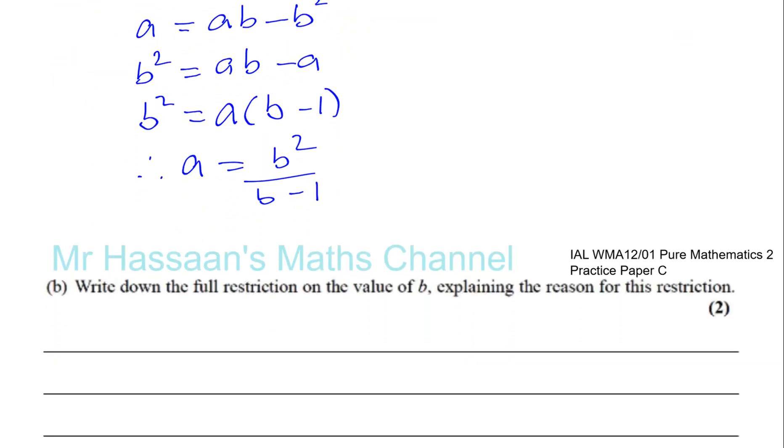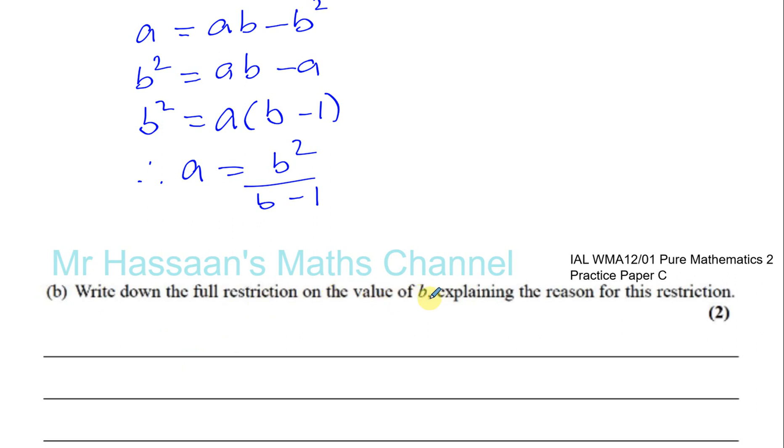part B says, write down the full restriction on the value of B. Explain the reason for this restriction. Okay, I can see straightaway restriction is going to be the fact that B cannot equal 1. B cannot equal 1. Why?